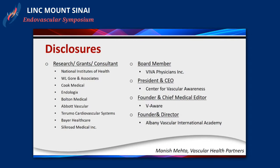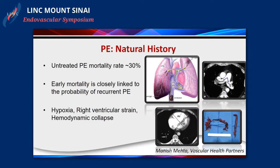So let's get started. These are my disclosures. The natural history of pulmonary embolism - why is this a topic of discussion? Obviously because there is significant morbidity and mortality associated with it. And I think what we are just embarking on over the past several years is just our beginnings of understanding what it is that leads patients to have this increased mortality.